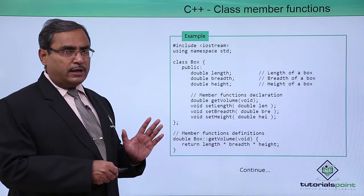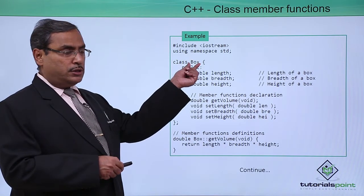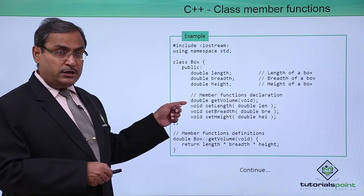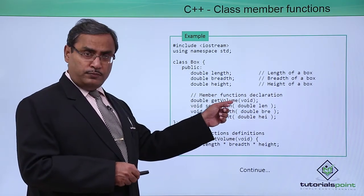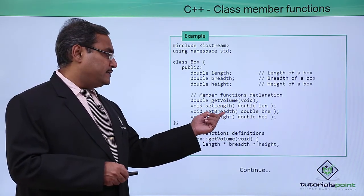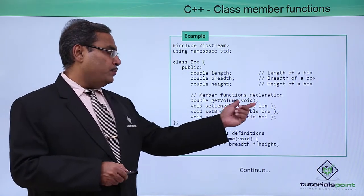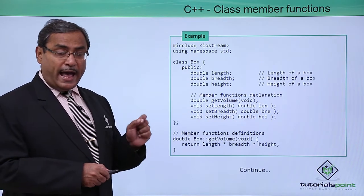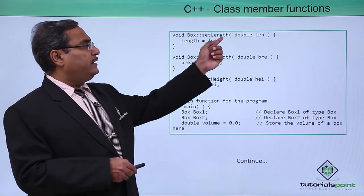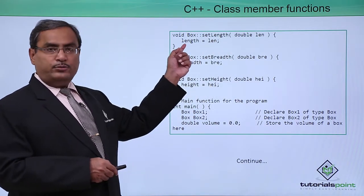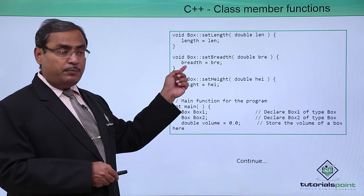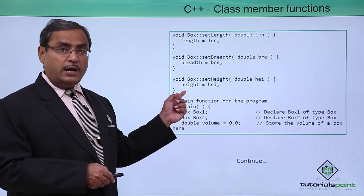Here we have a full-length program for discussion. The name of the class is box; under the public section we have three variables: double length, breadth and height. We also have one member function double get_volume which takes nothing as input argument, and another three member functions: set_length, set_breadth and set_height. These will return nothing but will take a double variable as input argument. In get_volume we multiply length, breadth and height. In set_length, the value passed is assigned to the member variable length. Similarly the breadth variable is assigned to the member variable breadth, and height is assigned to the member variable height.